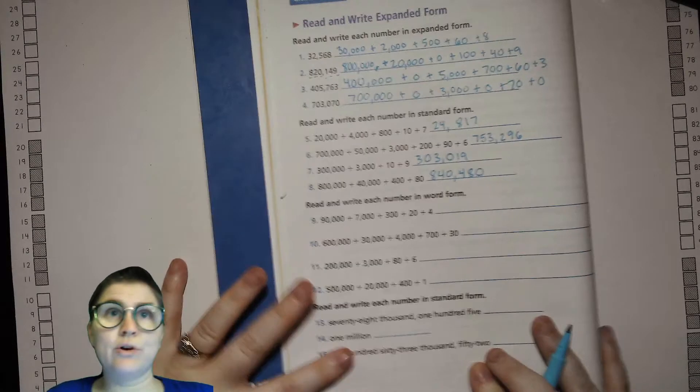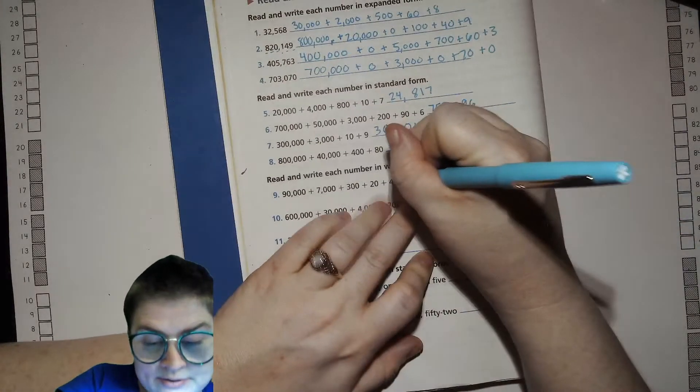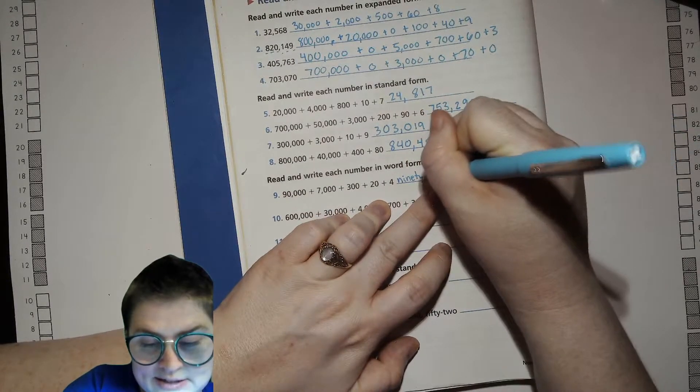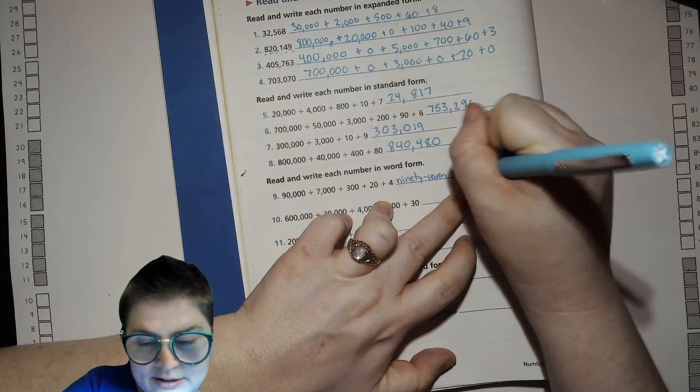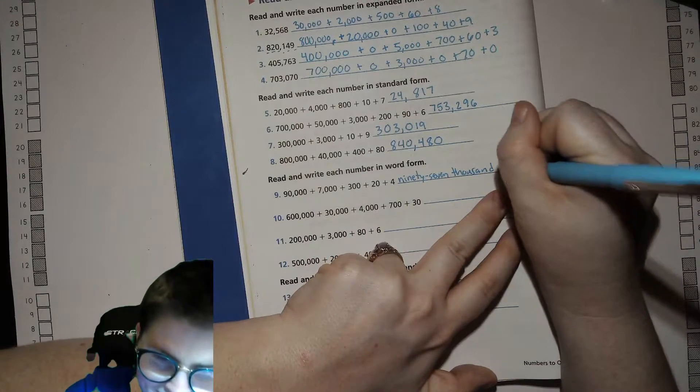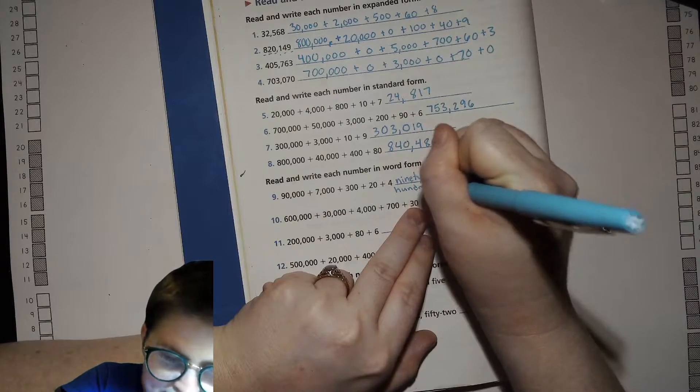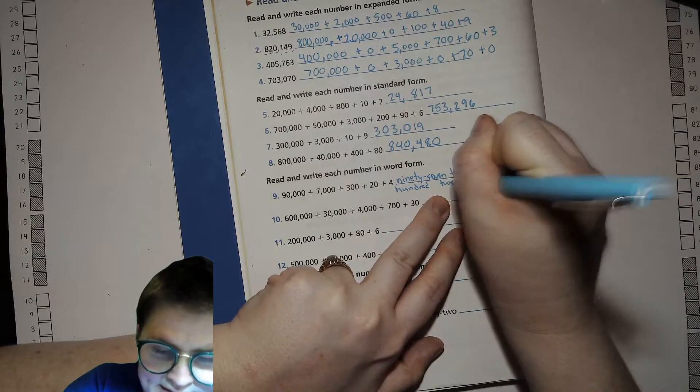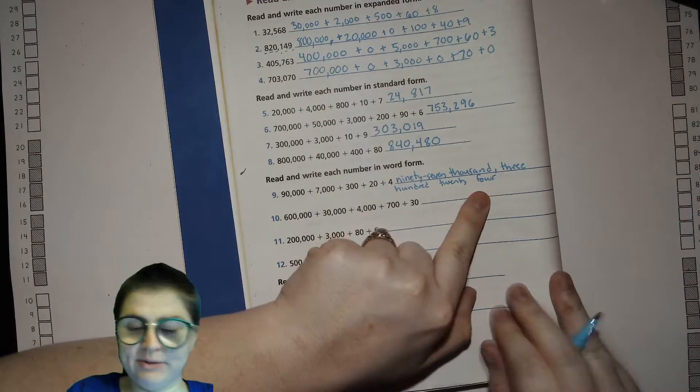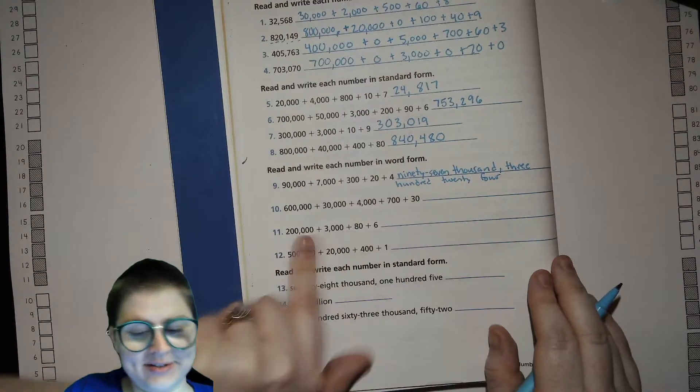Now we're converting these to word form. Ninety-seven thousand three hundred twenty-four. Make sure you're spelling four with that U in there because it's the number four. I don't think I got a space there, though, huh?